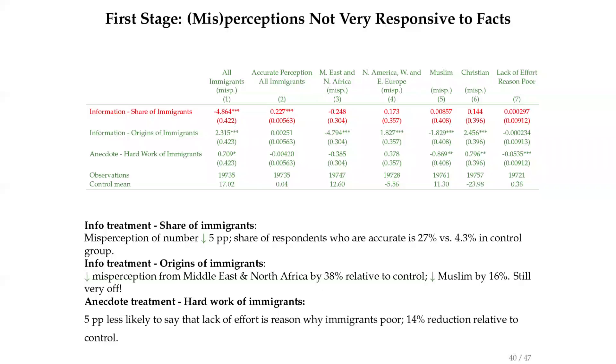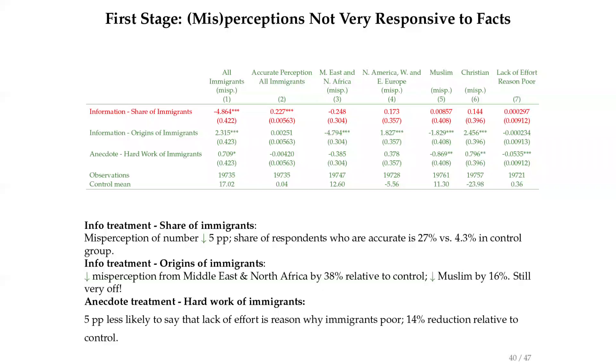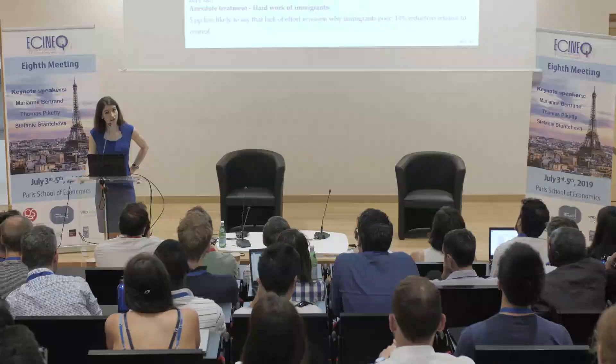What happens on the perceptions of immigrants? The treatments work in the sense that they move the first stage — the corresponding misperception they're supposed to move. The share of immigrants information reduces the perceived share of immigrants in the countries — that's the first column in red. But the gap was much bigger than five percentage points. People somehow don't fully assimilate the information, or they don't believe it, or they say there are second-generation immigrants. It doesn't close the full gap — the misperception gets a bit closer, but not entirely.